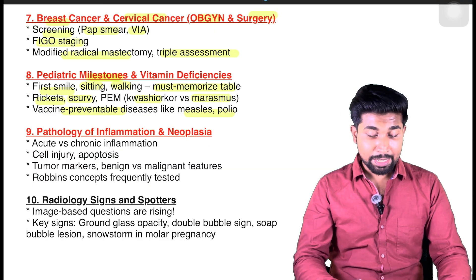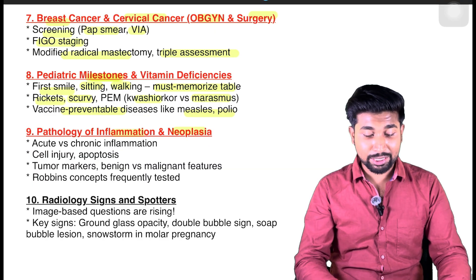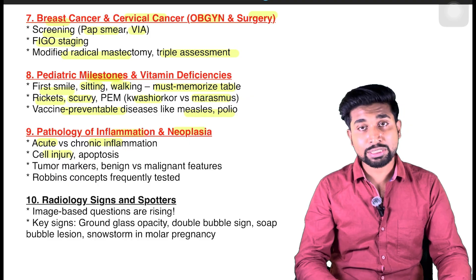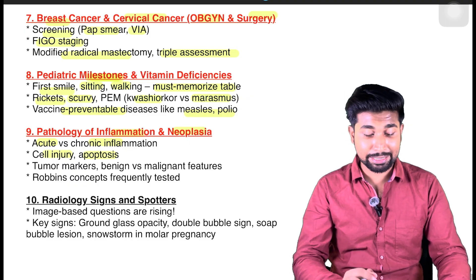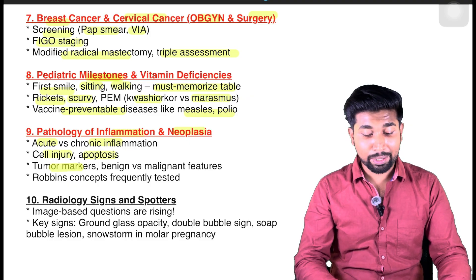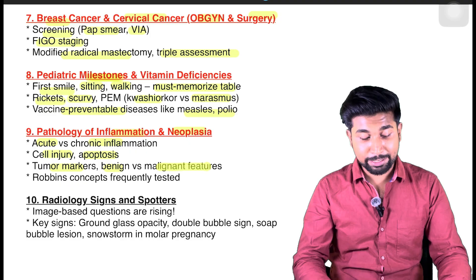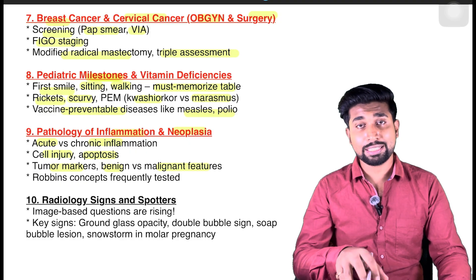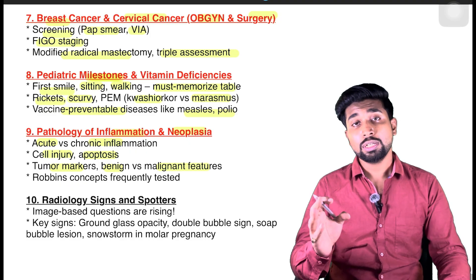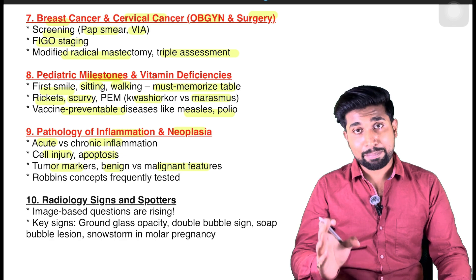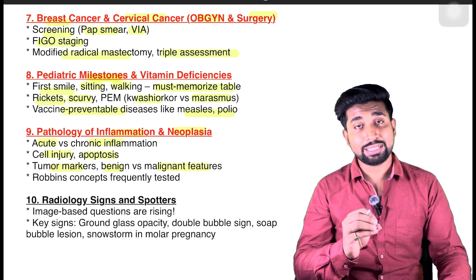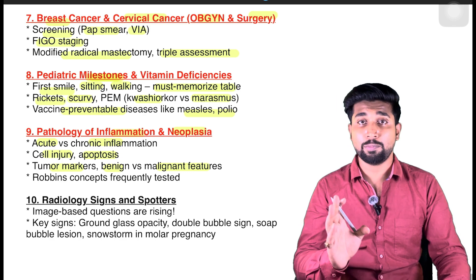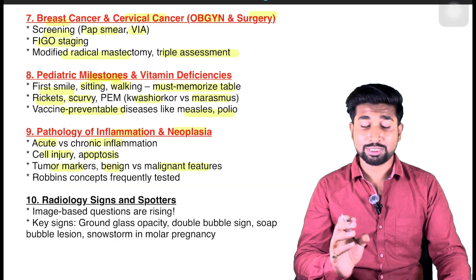From pathology, inflammation and neoplasia are key topics. Cover acute versus chronic inflammation, cell injury, apoptosis, necrosis, the images, tumor markers, and benign versus malignant features. If you have studied from Robbins, that is fine, but these are the most important areas. Also revise the hematology portion very well, because no question came from hematology in the last exam — so there is a high chance a question will come from it this time.